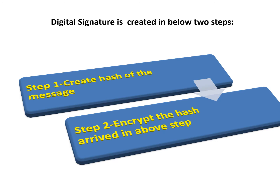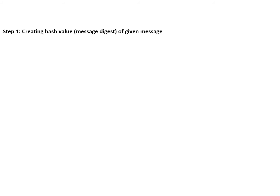Digital signature is created in two steps. First step is to create the hash of the message. Second step, once this hash is created, you need to encrypt the same. Please note hash is also known as message digest. Step one: creating hash value, that is the message digest of any given message.